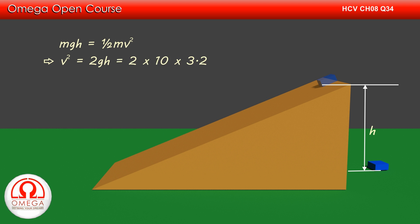Putting the values, we get v squared is equal to 2 times 10 times 3.2, or 64. Thus v is equal to 8 meters per second. This is the answer to part C of the question.